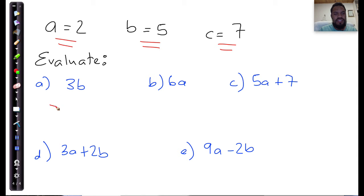This one's quite simple. This just says I must take 3, and I must substitute the value of b that was given, which was 5 in there. So 3 multiplied by 5 is equal to 15.